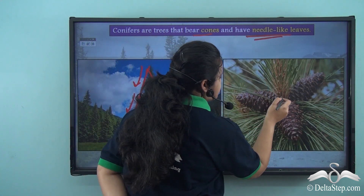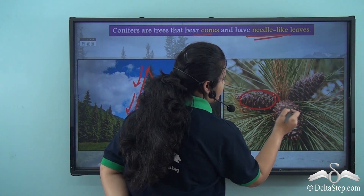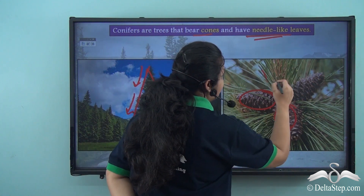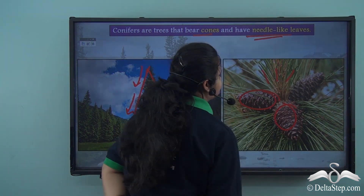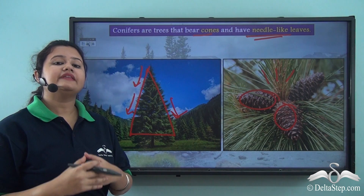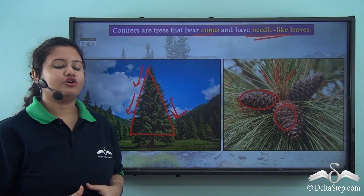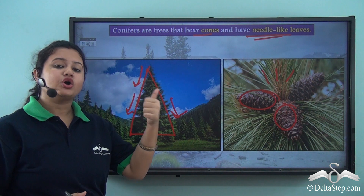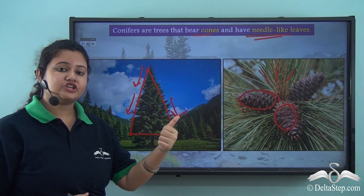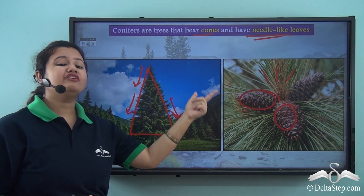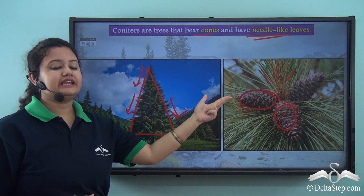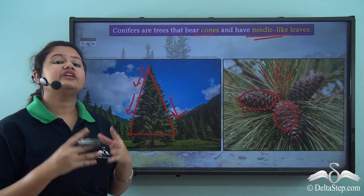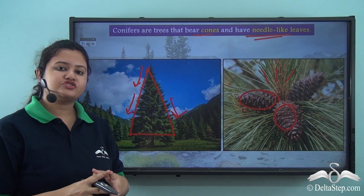Conifers bear cones and have needle-like leaves. The important characteristics of coniferous trees are that they are conical in shape, they bear cones, and have needle-like leaves.